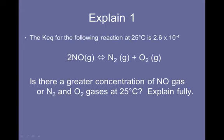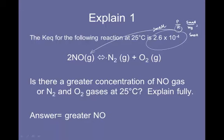Here's another question. The KEQ for the following reaction is this number. Is there a greater concentration of NO gas or N2 and O2 gases at 25? So this is one of those thought questions. For this one, it's pretty easy. The KEQ is a very small number. So that means when we have products over reactants to get a small number, the reactants must be larger. A small number over a big number equals a small number. And the reactants are the ones that are more concentrated. So there's a greater concentration of NO gas, as it says here in the answer.